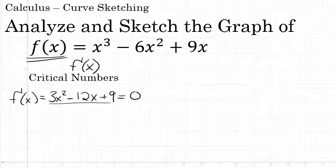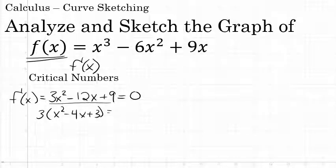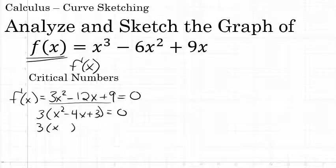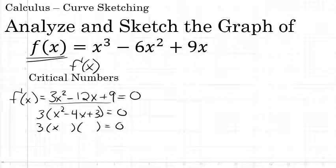The first derivative here is a quadratic, so there will be two solutions when I set it equal to zero — two critical numbers. I'll solve this equation by factoring. First I'll take a common factor of 3 out to the front, and then factor the quadratic x² - 4x + 3 as a product of binomials. This factors to (x - 3)(x - 1).